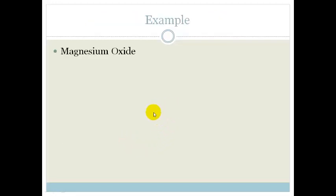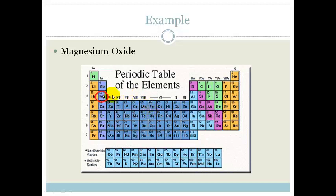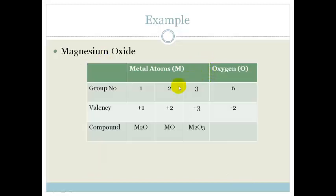So let's do an example of magnesium oxide. Magnesium is in group 2. Oxide obviously is in group 6. So again if we look at our table we've got group 2, magnesium and our oxygen. So that is just going to give us a very nice easy MgO.